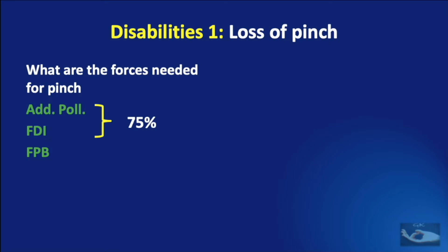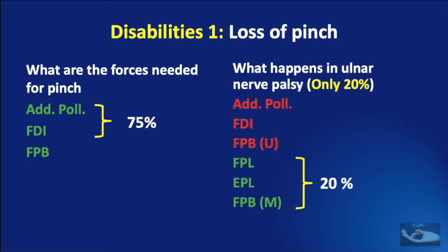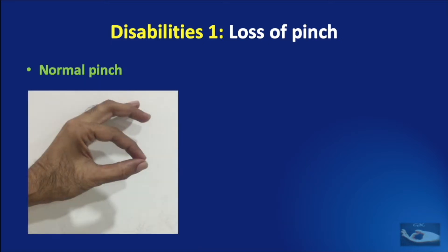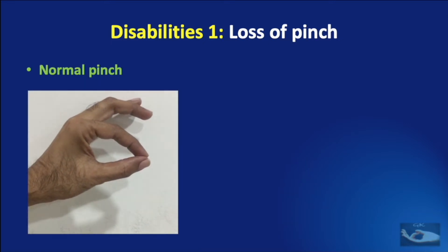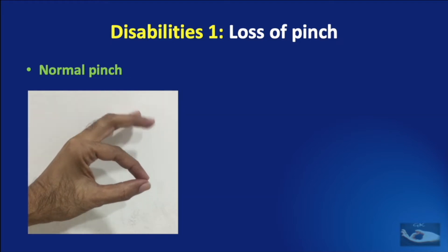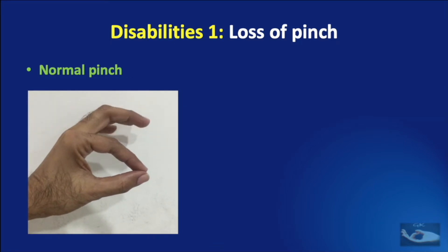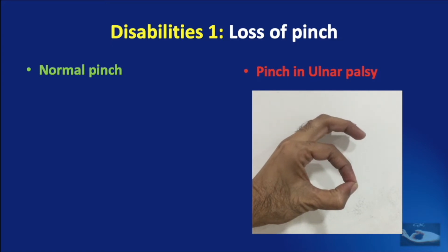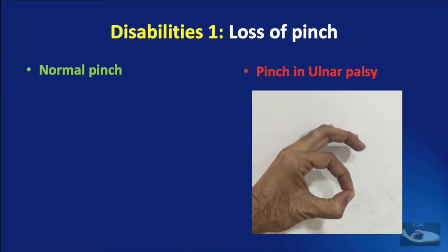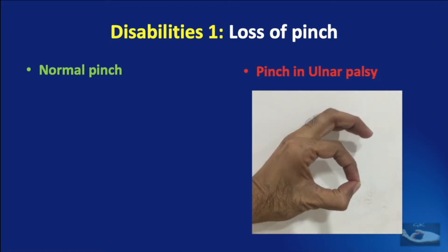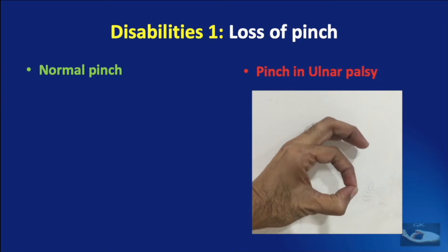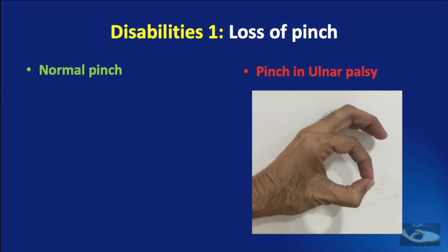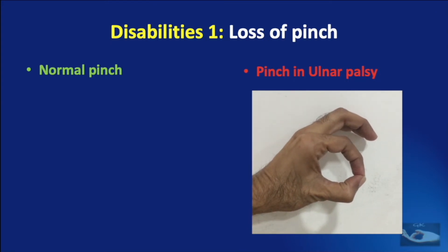The first disability in the hand affected by Ulnar Nerve Palsy is that only 20% of pinch power remains. The mechanism of normal pinch involves the adductor pollicis, flexor pollicis brevis, and first dorsal interosseous muscles. Due to paralysis of these muscles, the flexor pollicis longus comes into action and there is instability of the metacarpophalangeal joint, leading to hyperextension.